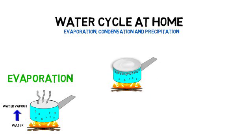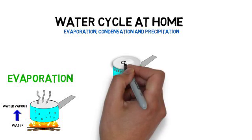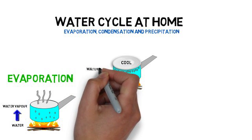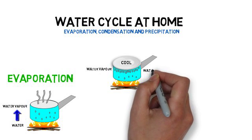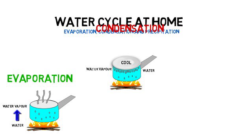Condensation: place a lid at the top of the bowl. The lid is cooler than the temperature of the water vapor, and therefore the water vapor cools down to become water when it reaches the lid.